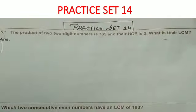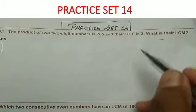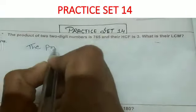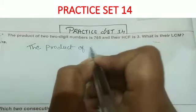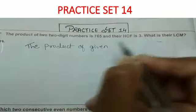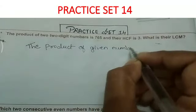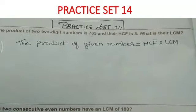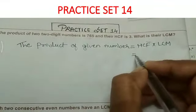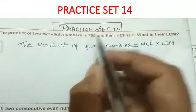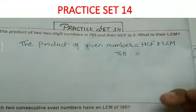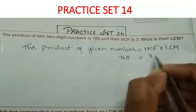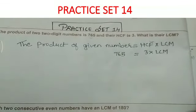First we have to write down the statement. The statement is: the product of given numbers is equal to HCF multiplied by LCM. Our product of the two-digit numbers is given as 765, the HCF is given as 3, and the LCM is not given, so we will write it as it is.